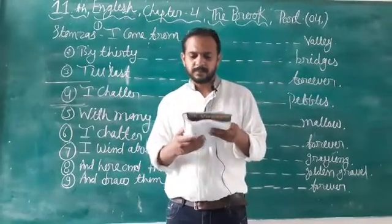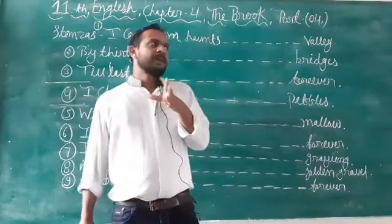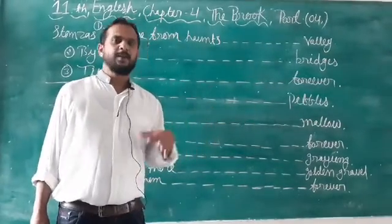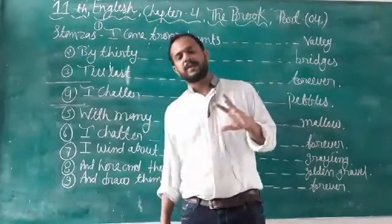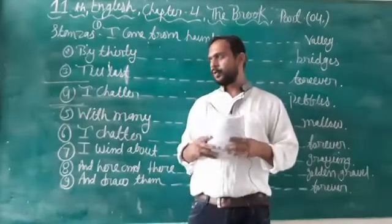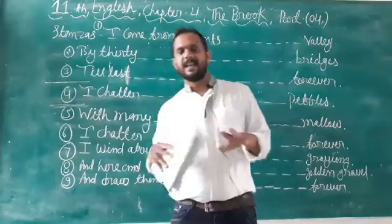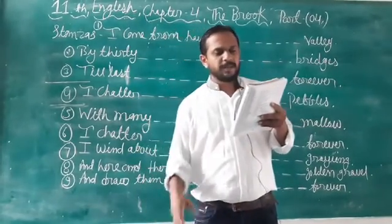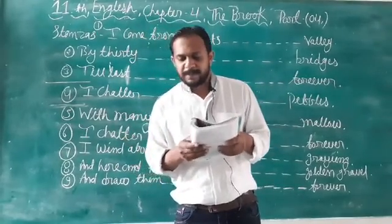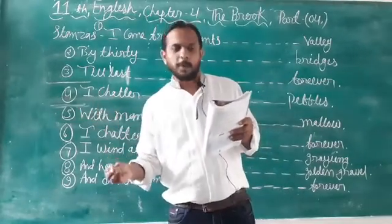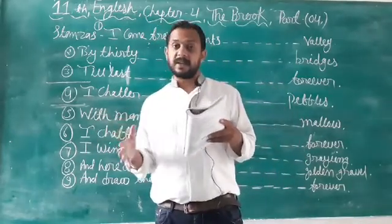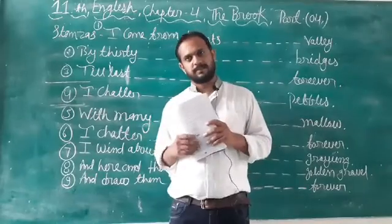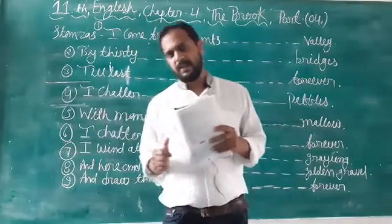So that was stanza number four. Now stanza number five: 'With many a curve, my bank I fret.' While the brook was on its journey, it will make many curves, it will move in a zigzag manner. While passing from different valleys, villages, and hamlets, it starts making curved lines. When it gets angry, it creates curves and a zigzag manner on the bank of the brook.